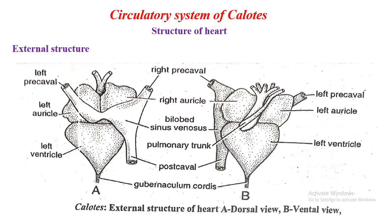The heart of Calotes, as you can see in the diagram, is triangular in shape and red in colour. It is a muscular organ having three chambers: the upper two chambers are auricles and the lower large chamber is the ventricle — so two auricles and one ventricle.